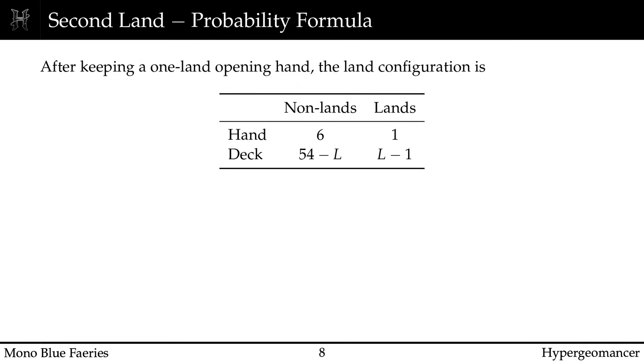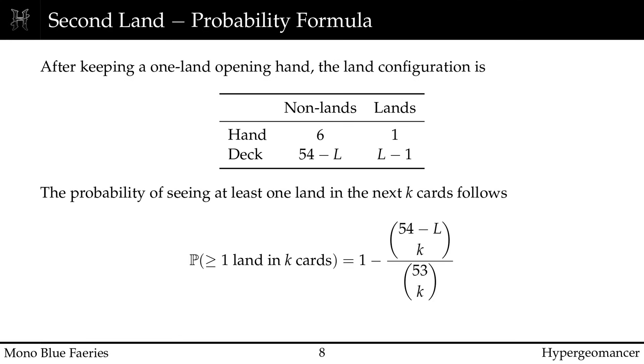Let's address the elephant in the room. Should you ever keep a 1 land hand? Conventional wisdom says no, but Mono Blue Faeries isn't a conventional deck. After keeping a 1 land hand, your library has 53 cards left. 1 land is in your hand, so there are L-1 lands remaining in the deck. The question is simple. What is the probability of seeing at least 1 additional land in the next few cards? The formula computes exactly that.